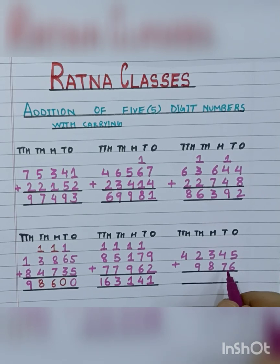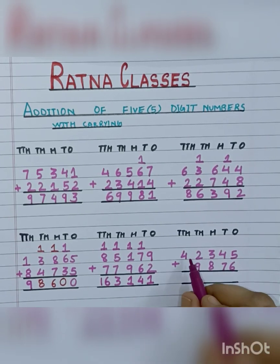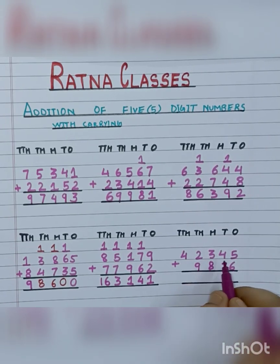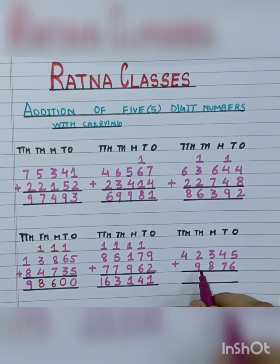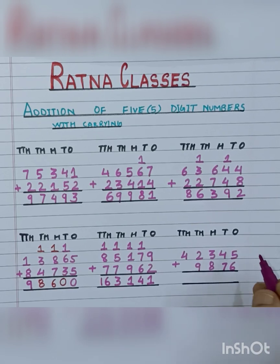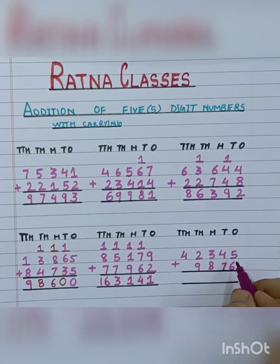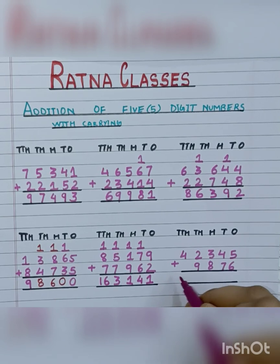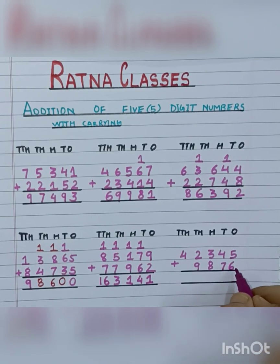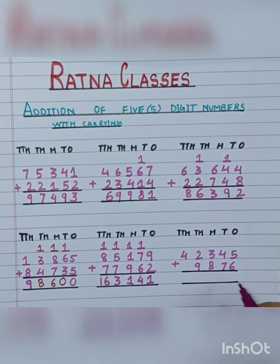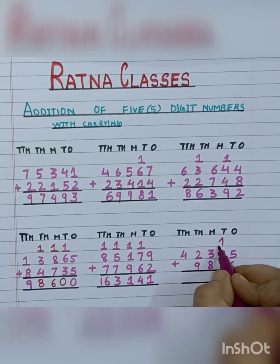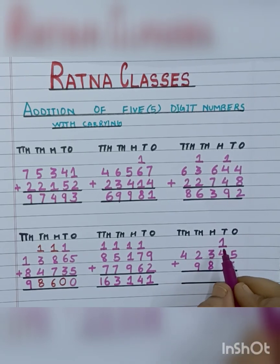Now our last sum is 42,345 plus 9,876. Let's start adding. First, we will add 5 plus 6, which is 11. We will write 1 here and take 1 carry.